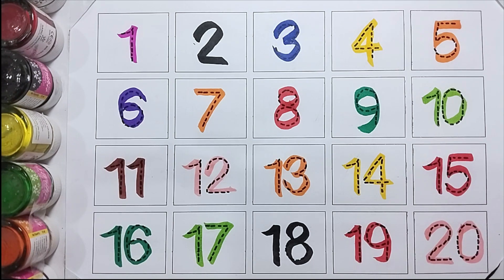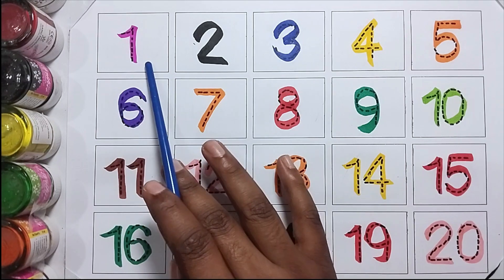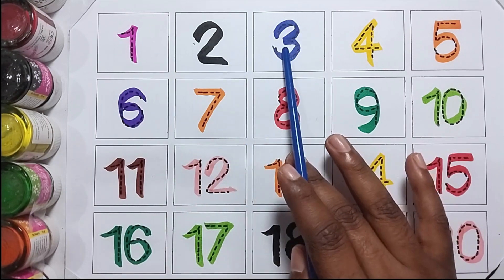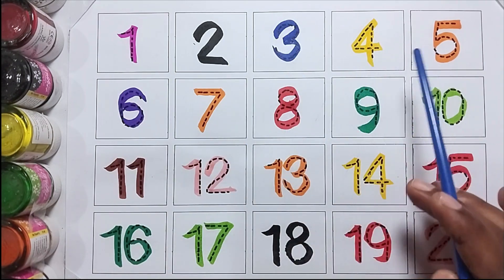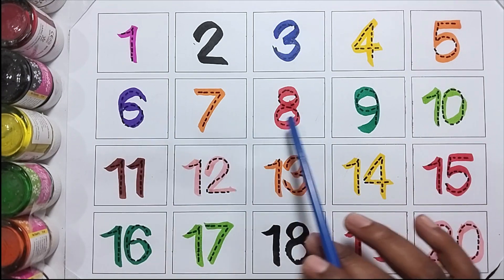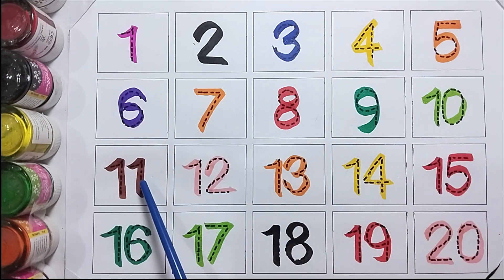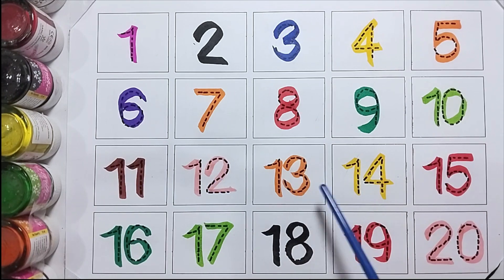Twenty. One, two, three, four, five, six, seven, eight, nine, ten, eleven, twelve, thirteen, fourteen, fifteen, sixteen, seventeen, eighteen, nineteen, and twenty.